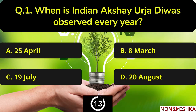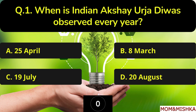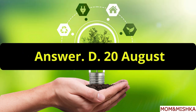When is Indian Akshay Urja Diwas observed every year? The answer is Option T, 20th August.